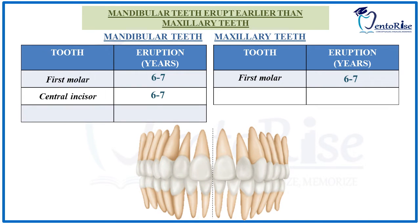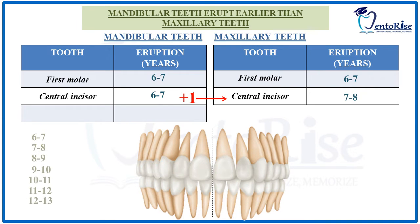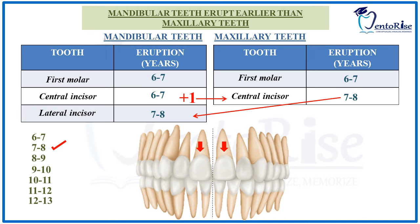After the mandibular central incisor, its maxillary counterpart — the maxillary central incisor — will also start erupting in the next age group of 7 to 8 years. Meanwhile, the mandibular lateral incisor will also start erupting in this same age group. Therefore, we have two teeth erupting in the age group of 7 to 8 years: the maxillary central incisor and the mandibular lateral incisor.